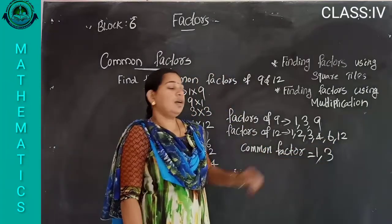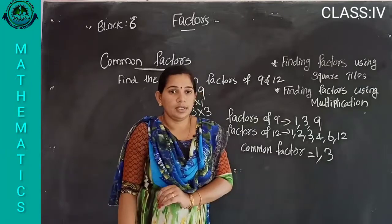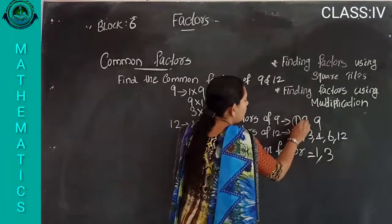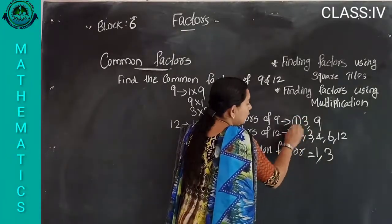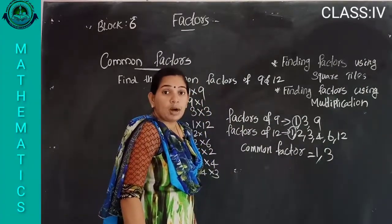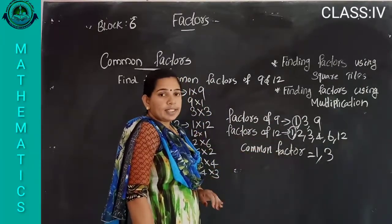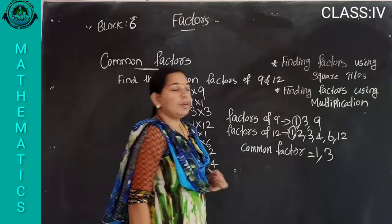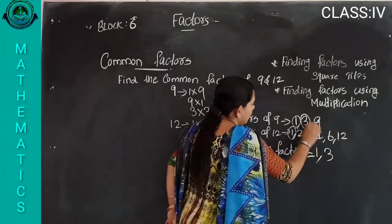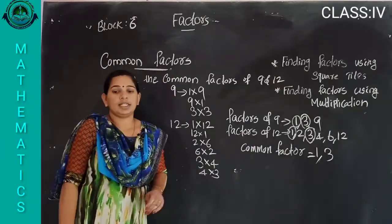Then after that you find out the common factor. Which are the common numbers here? Those are the common factors. Same as in the previous step on common multiples — find the factors, then find the common numbers.